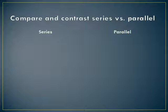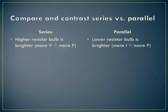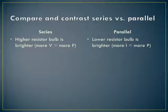A quick comparison of series and parallel circuits: in series circuits, the higher resistor bulb is brighter because more voltage equals more power. But in parallel circuits, the lower resistor bulb is brighter because more current also equals more power. The real lesson is you can't always say a certain bulb is always going to be brighter — it depends on how those bulbs are hooked up. There's nothing in a bulb alone that determines its brightness.